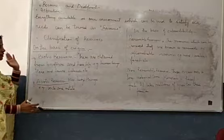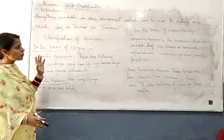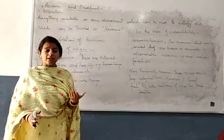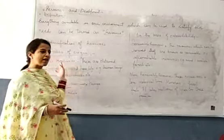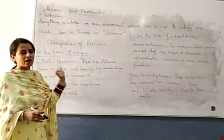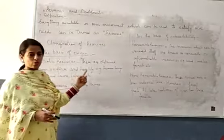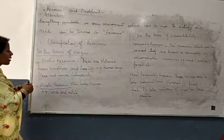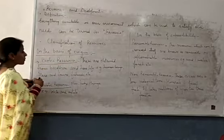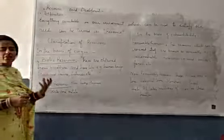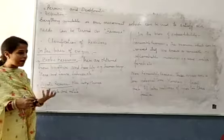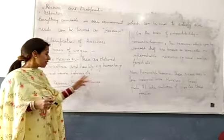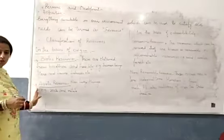So, to recap the classification on the basis of origin: biotic resources include all living things such as human beings, flora, fauna, and fisheries. Abiotic resources comprise non-living things like rocks and metals.